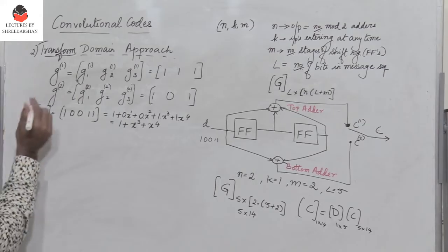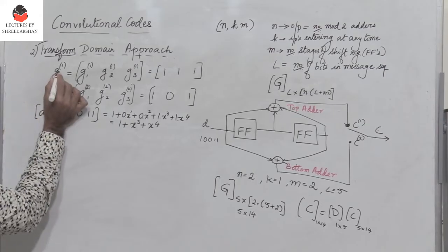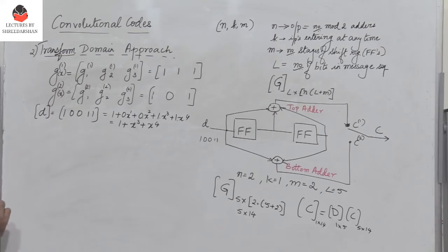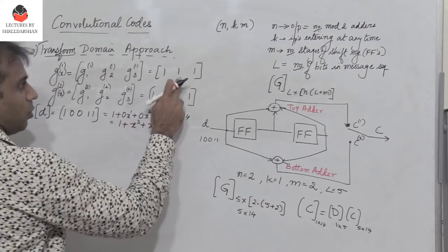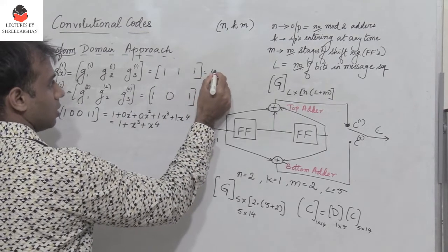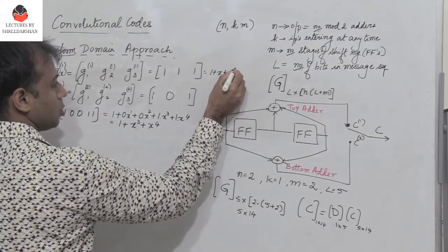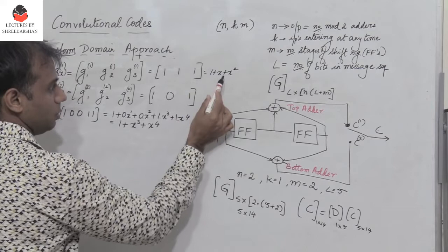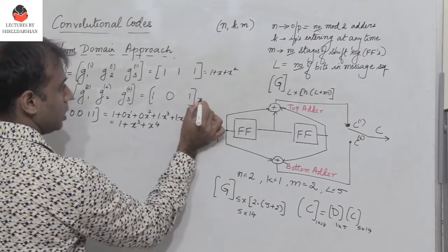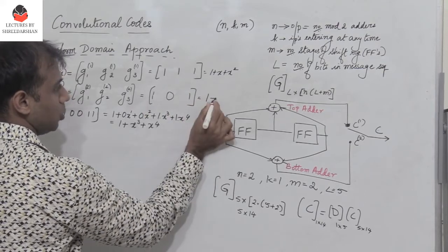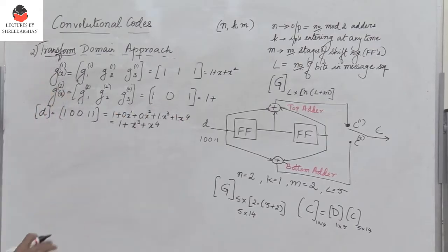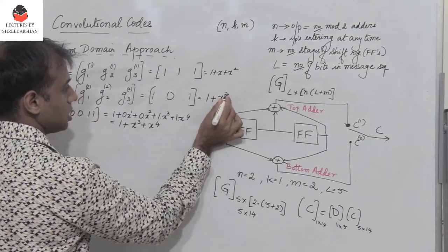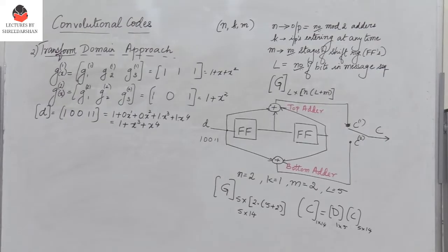Similarly, we define the generator polynomials G1(x) and G2(x). For G1, we have 1, 1, 1, so G1(x) = 1 + x + x². For G2, we have 1, 0, 1, so 1·x⁰ plus 1·x², giving G2(x) = 1 + x².